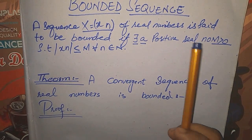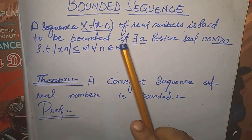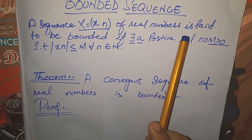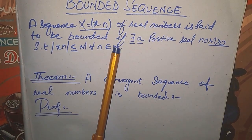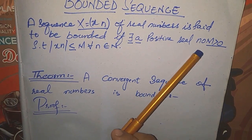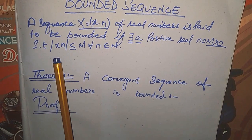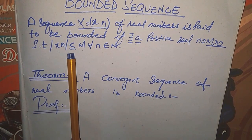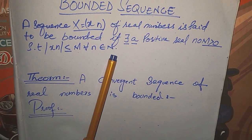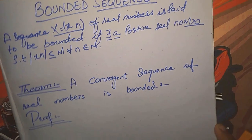Assalamualaikum. Today we discuss a bounded sequence. A sequence x equal to xn of real numbers is said to be bounded if there exists a positive real number M greater than 0 such that |xn| is less than or equal to M for all n belonging to the set of natural numbers.